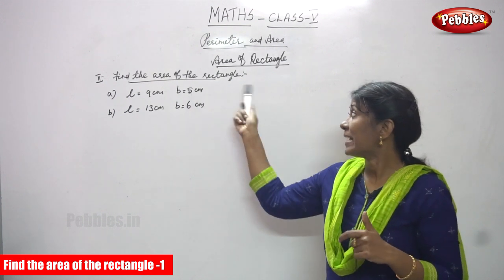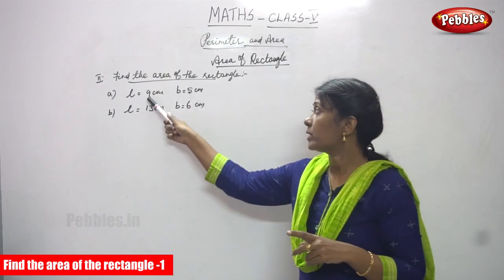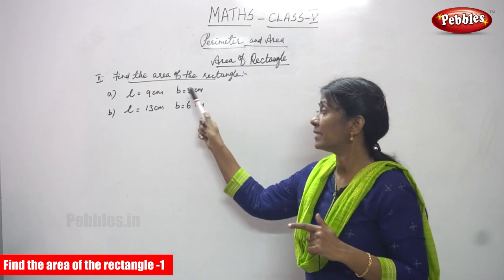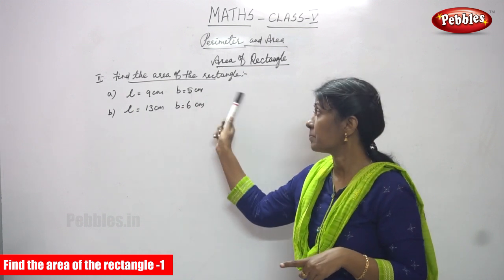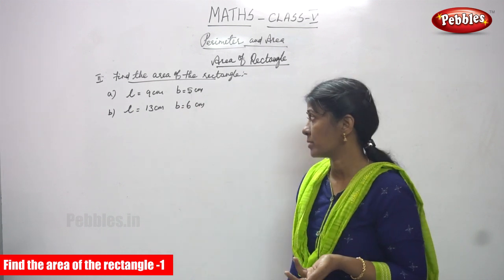Now we are going to do the sum, find the area of the rectangle. L is equal to 9 cm, length means length is equal to 9 cm, breadth B is equal to 5 cm.